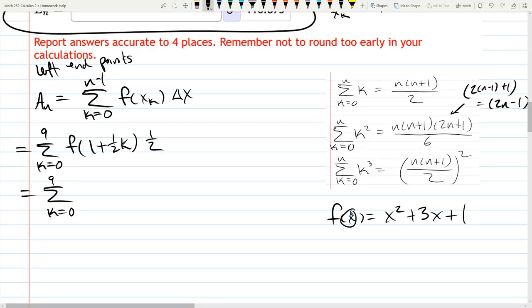I'm replacing X, which appears twice, with 1 plus 1 half K. So that gets squared, plus 3 times that same thing, plus 1 times 1 half. We have a little bit of algebra to do. The easy part is distributing the 3, we do need to FOIL this term right here.